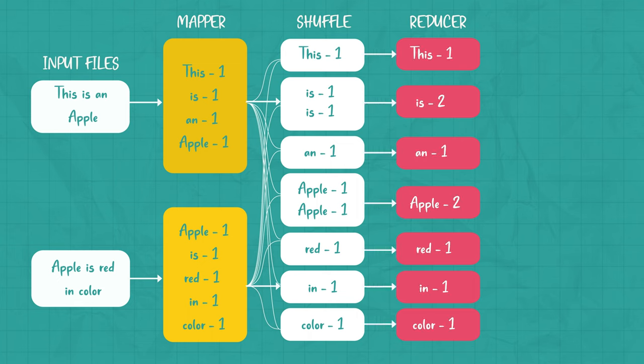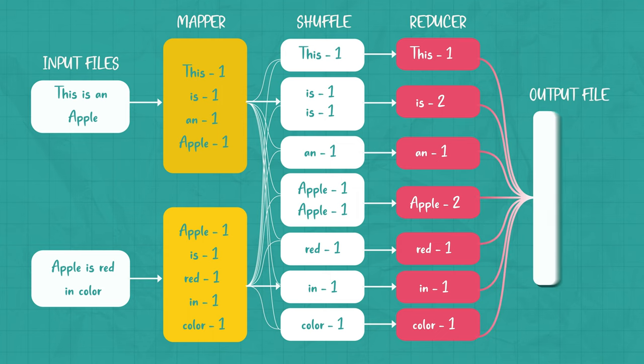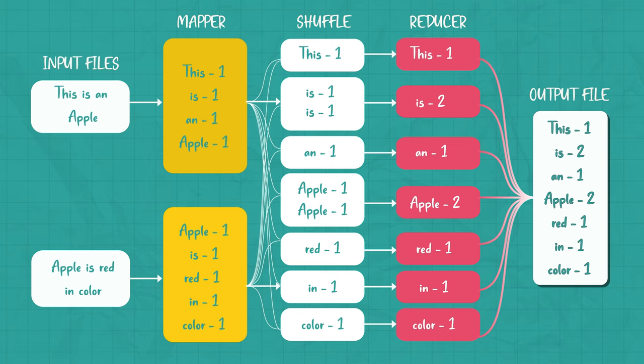Now all the words present in the data are combined into a single output in the reducer phase, and the output shows the frequency of each word. Here in the example, we get the final output of key value pairs: 'this' occurred one time, 'is' occurred two times, 'an' occurred one time, 'apple' occurred two times, 'red' occurred one time, 'in' occurred one time, and 'color' occurred one time.